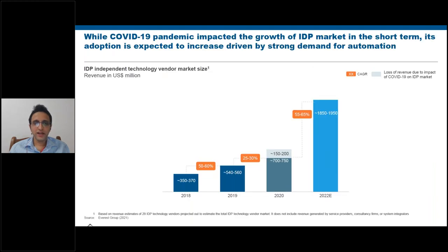IDP is a relatively nascent market, but over the last two years it has shown tremendous growth. Our numbers show adoption has been increasing by more than 50% year-on-year, and we expect this to continue. While COVID-19 impacted some growth in 2020, we expect automation in general — and IDP in particular — to accelerate further in the post-2020 environment.